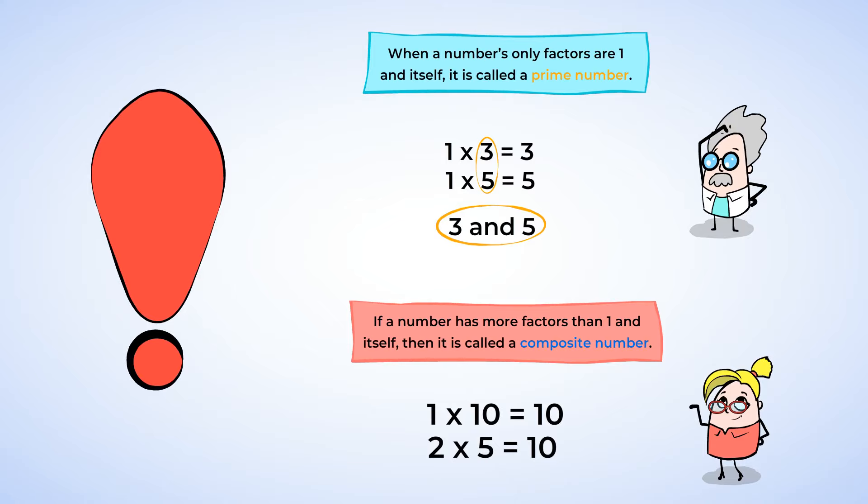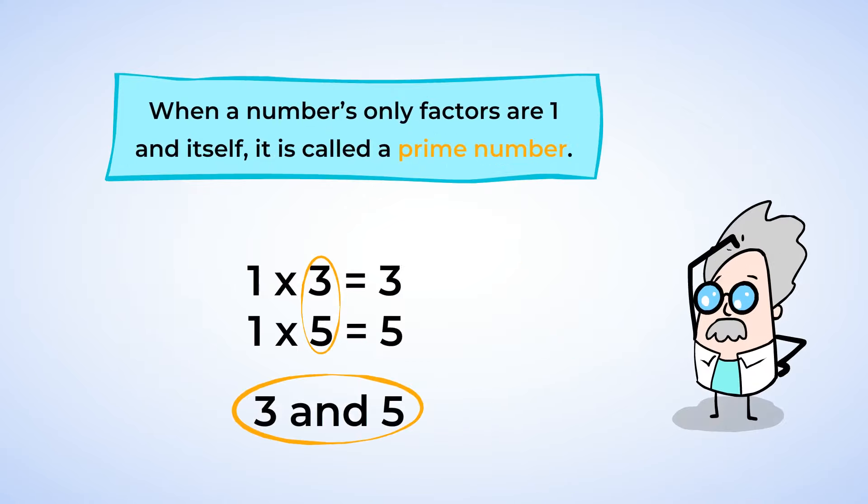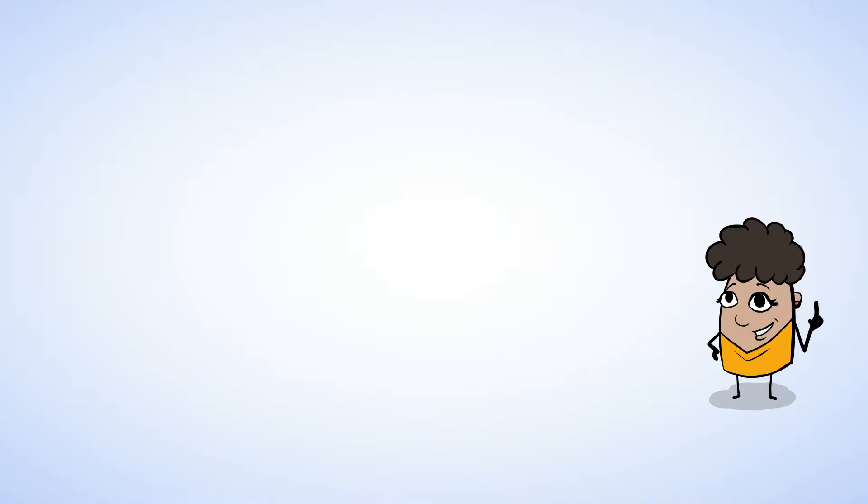A great way is to create an organized list. We always start with 1 since all numbers have 1 as a factor, and then we work our way up to the number itself. So let's try this out.